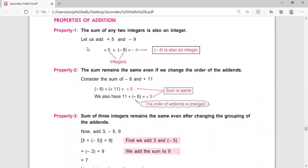These are some properties of addition that we are going to use in this worksheet. Its first property is sum of any two integers is also an integer. When we add two integers, the result will also be an integer.